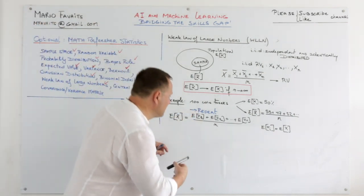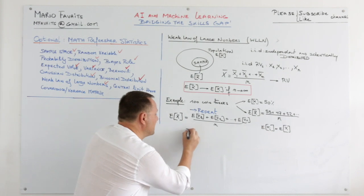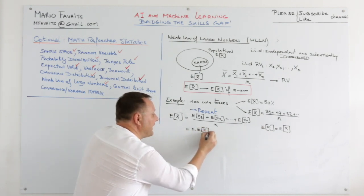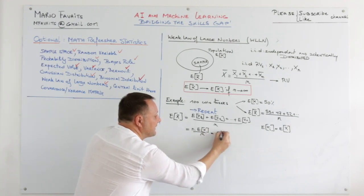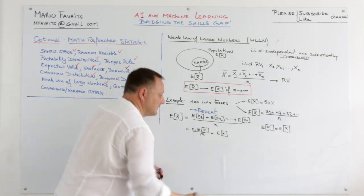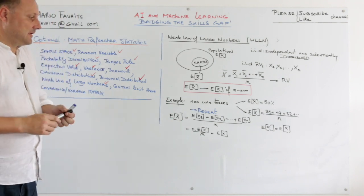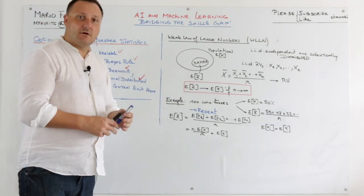So that means that this can be written as n times the expected value of X divided by n. And that is the expected value of X. So we just proved the weak law of large numbers.